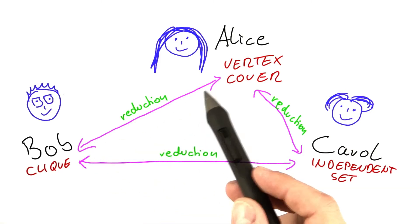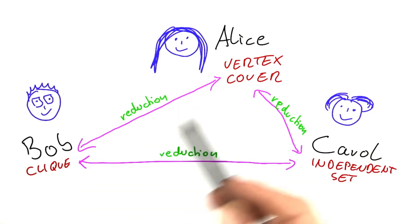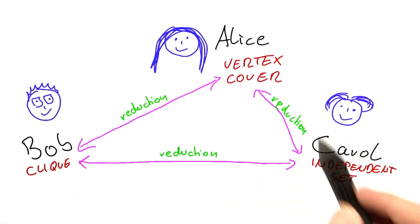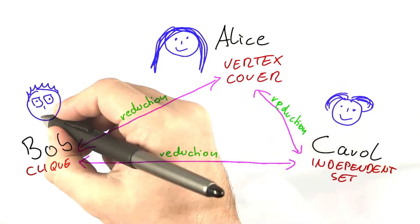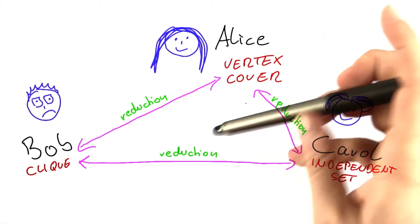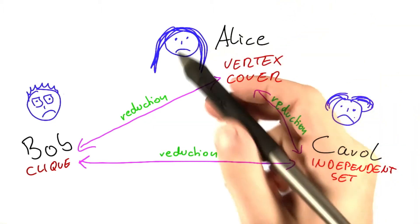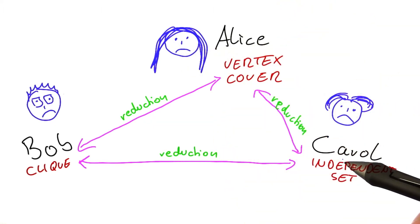And since we have already seen that there are polynomial time reductions between CLIQUE, vertex cover, and independent set, if CLIQUE is NP complete, then these two problems here are also NP complete, which of course will mean that not only Bob will be very unhappy about this, but Alice and Carol will be in this together as well.